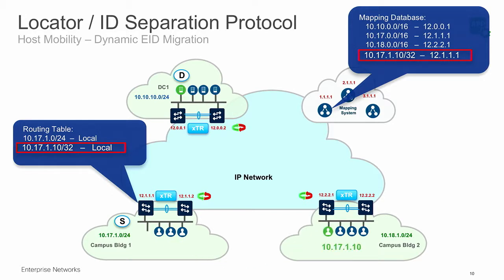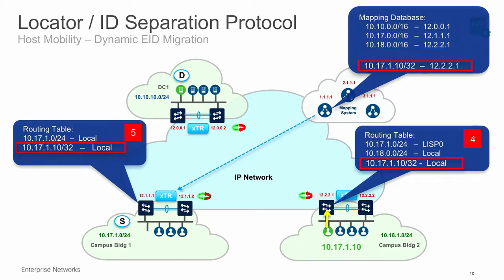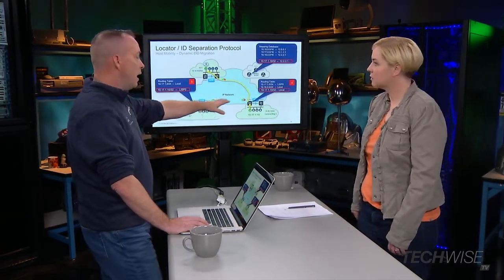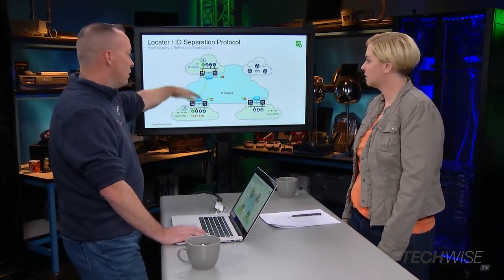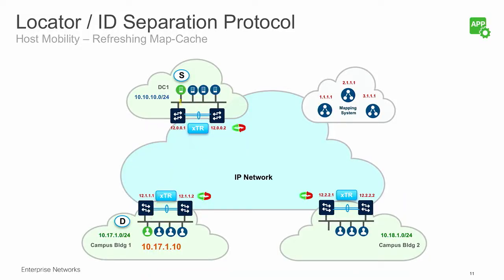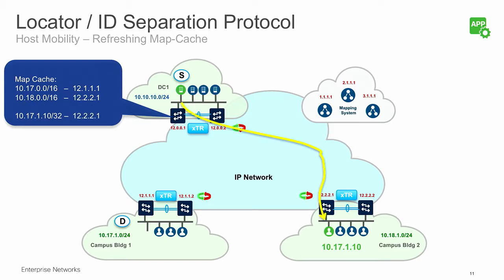But what happens if he moves to a different building? Traditionally, you would have to change your IP address — but that doesn't happen anymore. When the host starts communicating on the other side, the other first hop switch says 'he's currently connected to me now,' and updates the map system. Meanwhile, the map system tells the old device 'he's connected to this new one,' and traffic continues. We use an anycast gateway, so they can be the same on every edge switch. The same kind of thing happens in reverse — when the host moves, the old device says 'I don't have them anymore, please check with the map system,' traffic is rerouted to the new device, and it all happens in a few hundred milliseconds.